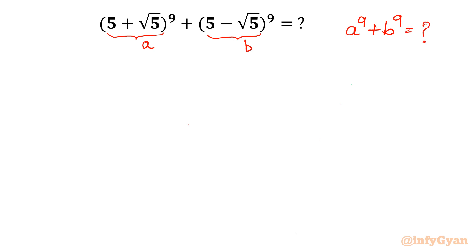Now if we have to find A⁹ plus B⁹, we know the values of A and B. So I will write: A is equal to 5 plus √5, and B is equal to 5 minus √5.